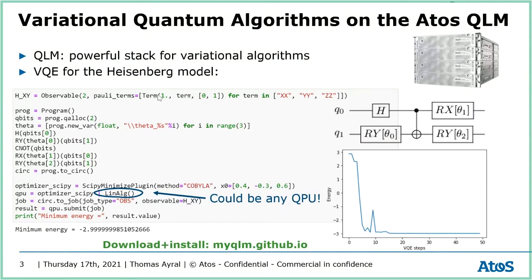What we're going to do in this small example is work with a Heisenberg Hamiltonian, which has an entangled ground state and therefore a non-trivial ground state. We first create this Hamiltonian because we want to find the ground state energy. We describe with a quantum program a variational circuit, with a Hadamard gate, then an RY gate with parameters theta zero, then a CNOT gate, then some X and Y rotations. Then all we need to do is perform a minimization task using an available QPU, which could also be an actual quantum processor.